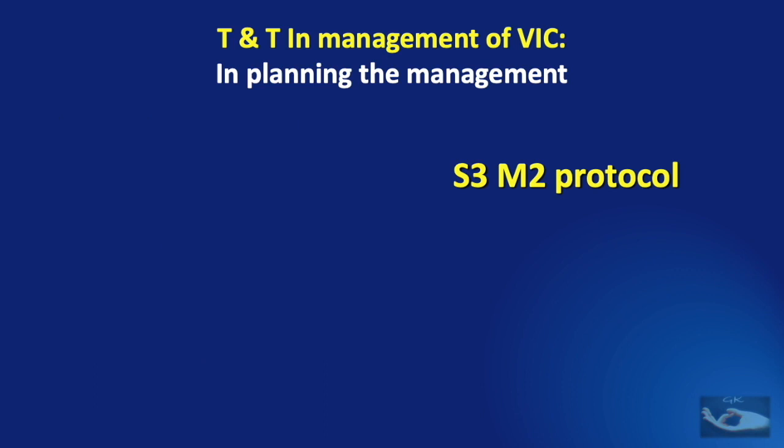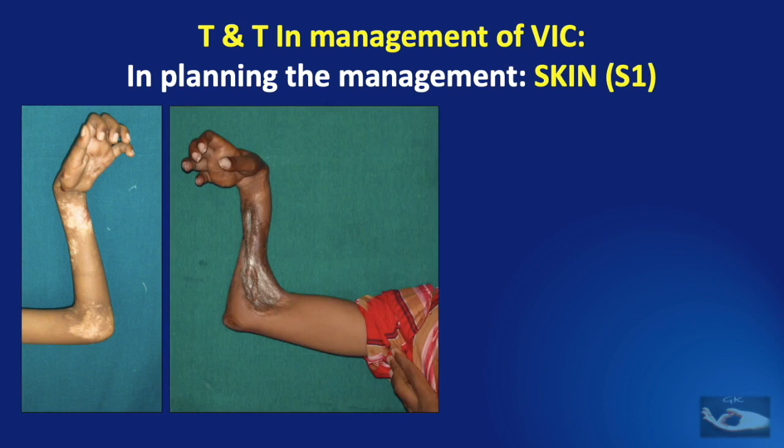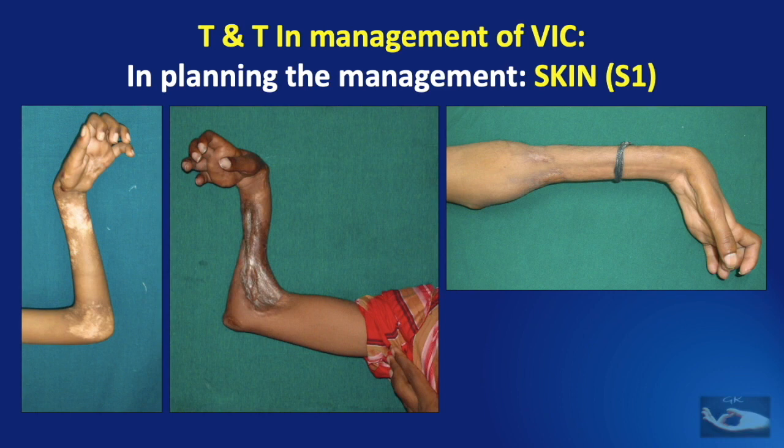In the assessment of S1 — that is, the skin problem — whether there is a contracture or an unstable scar as a result of grafting or just deficiency of normal skin, we need to first resurface all these with good, durable quality skin in the form of a flap cover.